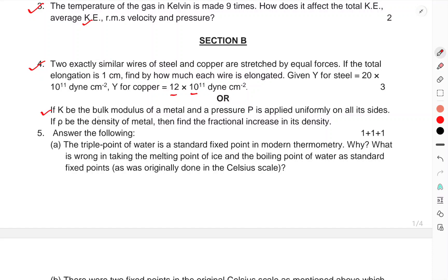Or, if K be the bulk modulus of the metal and pressure P is applied uniformly on all its sides, then Rho is the density of metal. Find the fractional increase in its density.